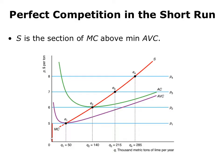Here you see an example of a firm in a perfectly competitive market. It's got an upward sloping marginal cost curve. Suppose that the market sets a price of $6 — P star equals 6. The firm's demand curve is therefore horizontal at this price and equal to its marginal revenue as well as its average revenue. If this firm is going to stay open, it will choose to produce a quantity of 140 units because that's the quantity that maximizes profit by setting marginal revenue or price equal to marginal cost.